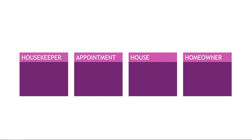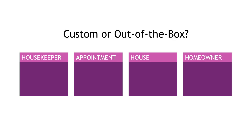I've added some boxes here and updated the names to make them more concise. We have a housekeeper, an appointment, a house, and a homeowner. Next, we need to figure out if we need to build custom entities or tables, or if we can use what's out of the box. Where possible, you want to reuse the out-of-the-box entities that come with Power Apps. There's really no sense in reinventing the wheel for things like a contact, which already has common fields like name, address, phone, and email address. It does take time to learn all the entities you get out of the box, but I'll give you some hints for our scenario.